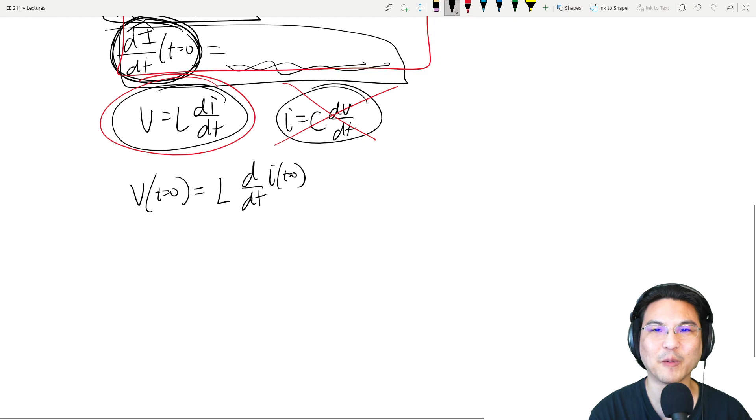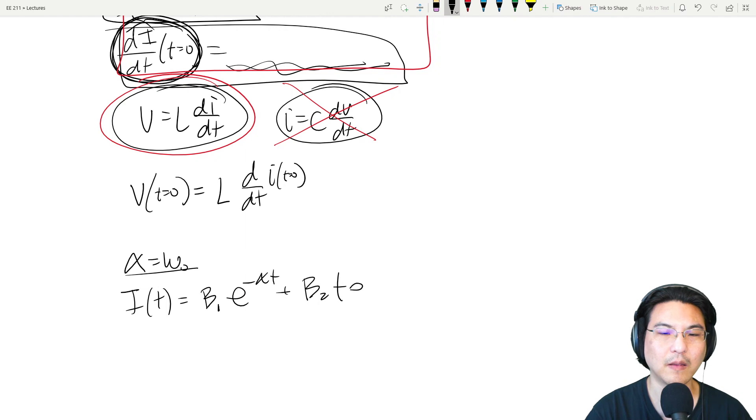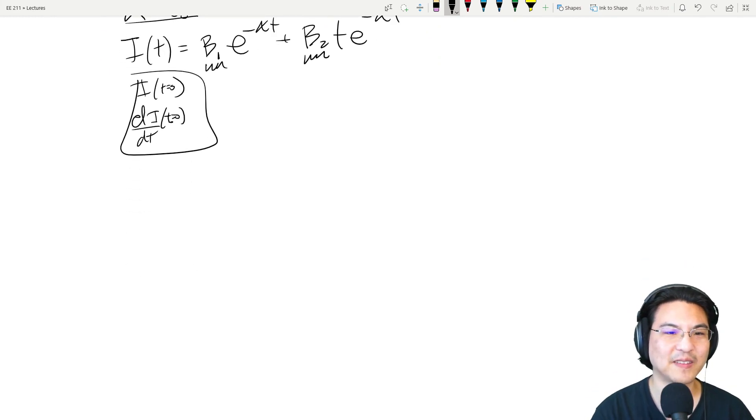And then just real quick, if you want to have alpha equal omega, this would be critically damped. So then the solution for current would look something like this. And then again, we have these two unknown coefficients, use the two initial conditions to write two equations, I at t equal to zero, and then di dt at t equal to zero. Right? Then two equations, two unknowns.